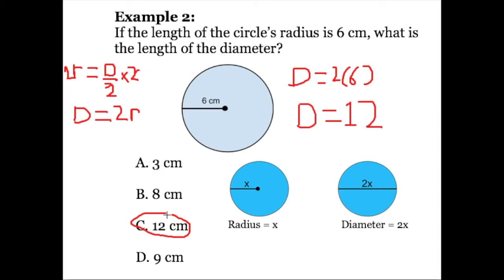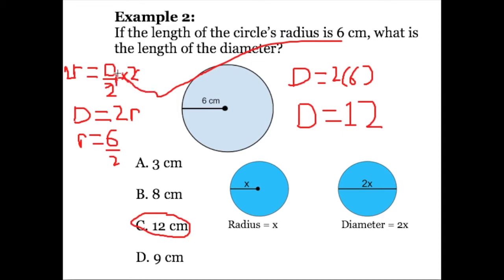Answer choice A is incorrect. If you picked A, you may have used the wrong formula — if you used r equals D divided by 2 and mistakenly plugged 6 in for the diameter instead of the radius, you would get 6 divided by 2 equals 3. Just understand that A is incorrect.